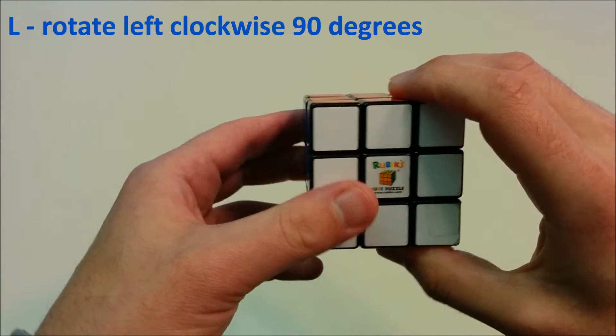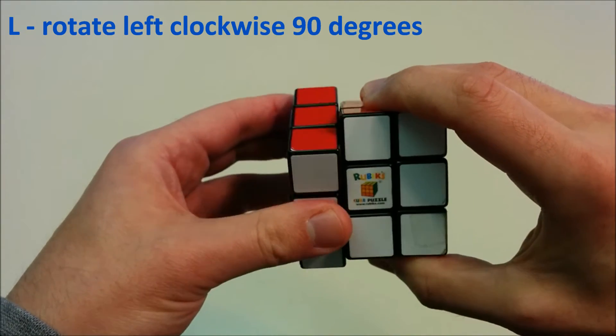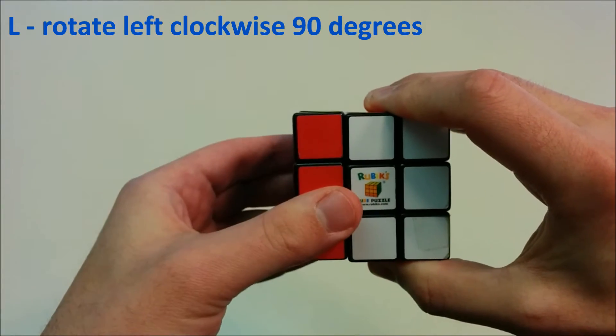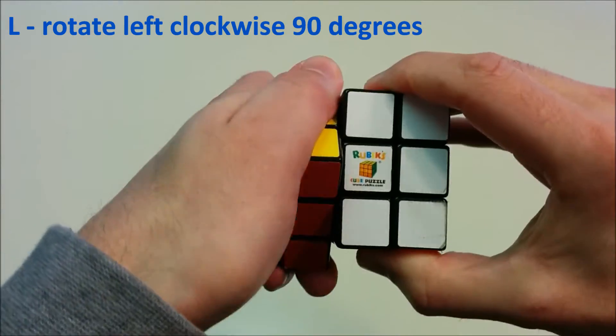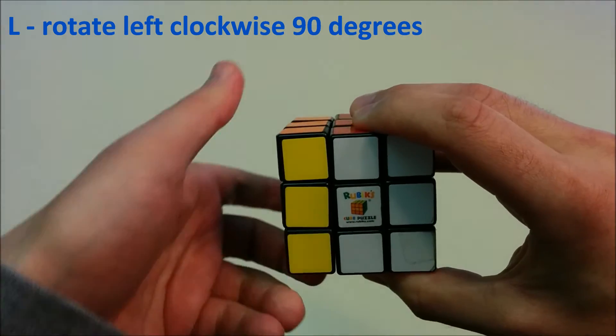The side which is on the left of what we're looking at, we can move it. The move L is a 90 degrees clockwise move relative to that face.